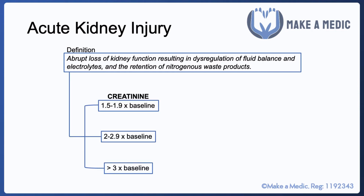AKI can be further subclassified into stage 1, 2 and 3 based on two parameters. First, it can be based on the rise in serum creatinine relative to the patient's baseline. Remember that creatinine can be affected by a number of other factors in addition to renal impairment, such as muscle mass, age and ethnicity. So it is important to compare the patient's serum creatinine to their usual baseline in order to see the change that has occurred.